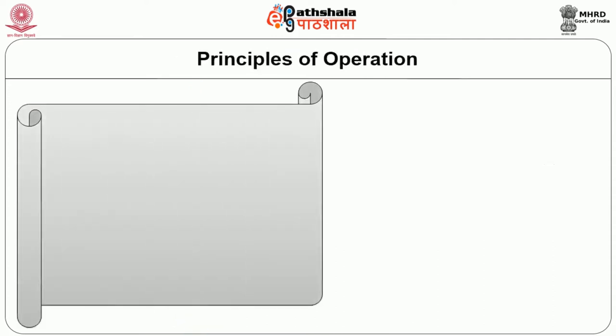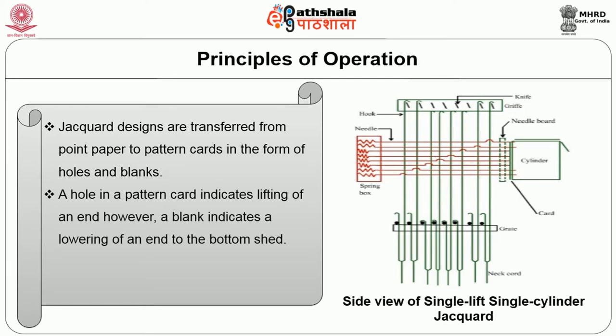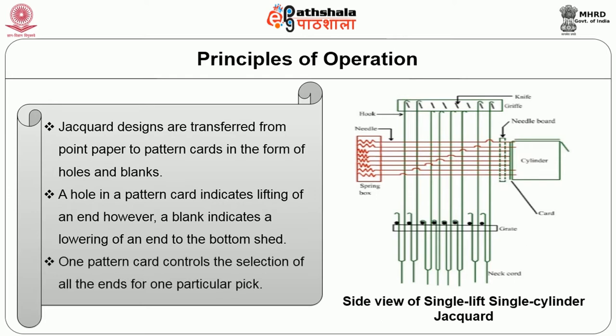We will now go into the principles of operation. Jacquard shedding patterns are transferred from point paper to pattern cards in the form of holes and blanks. A hole in a pattern card indicates lifting of an end, whereas a blank indicates a lowering of an end to the bottom shed. One pattern card controls the selection of all the ends for one particular pick.